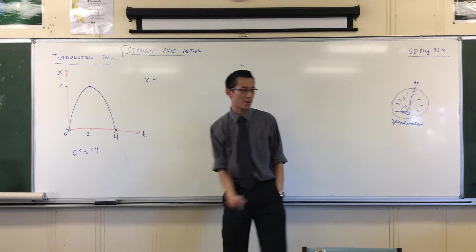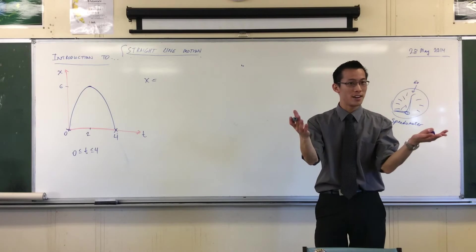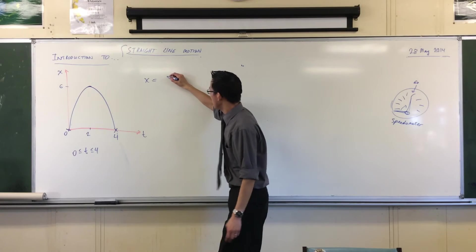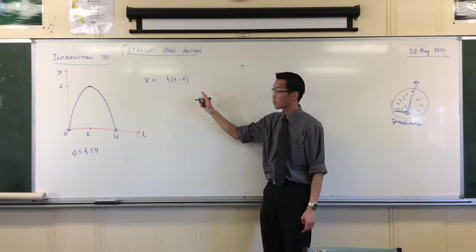So you automatically know what kind of form is it going to be in. x equals what? If 0 and 4 are roots, as it were, it should be t outside of t minus 4. That's got roots at 0 and 4, doesn't it? So I know that.